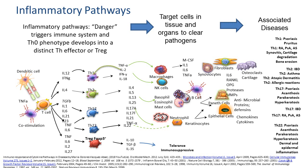One of the products of TH1 differentiation is interferon gamma, which was also one of the triggers that made the pluripotent T cell differentiate into TH1. So there's a retroactive positive feedback loop building up that response. This is something we all experience when we have trauma or disease — in a first stage, there has to be an augmentation of the particular cell best suited for dealing with that response.